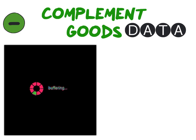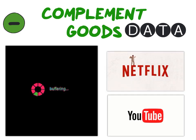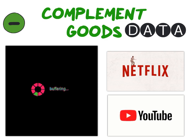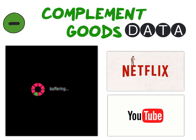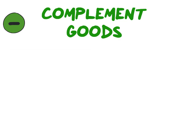In our example, our first good is data. Data is a complement good for both Netflix and YouTube. Suppose that the price of mobile data increases. This would lead to a reduction in the demand or the use of Netflix and YouTube, as it would become more expensive to stream videos online.